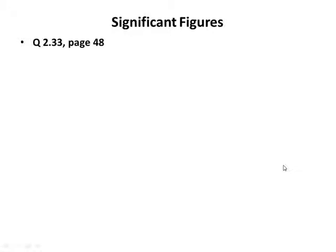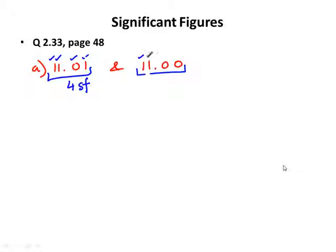Let's look at Problem 2.33 on page 48: in which of the following pairs do both members have the same number of significant figures? For pair A — 11.01 and 11.00: 11.01 has four sig figs (all non-zero and confined zero digits). 11.00 also has four sig figs because there is a decimal point, making the trailing zeros significant. So both numbers in pair A have the same number of sig figs.